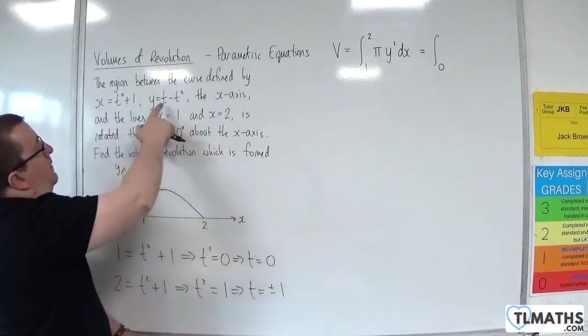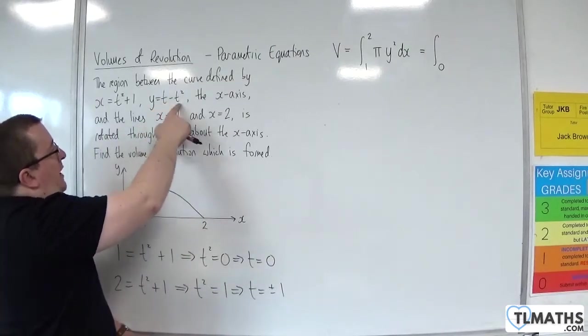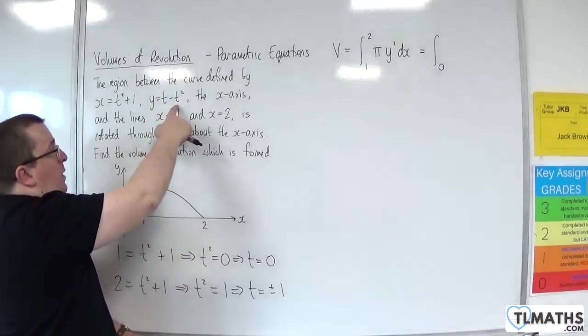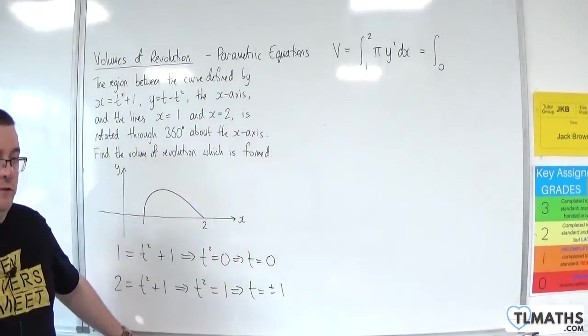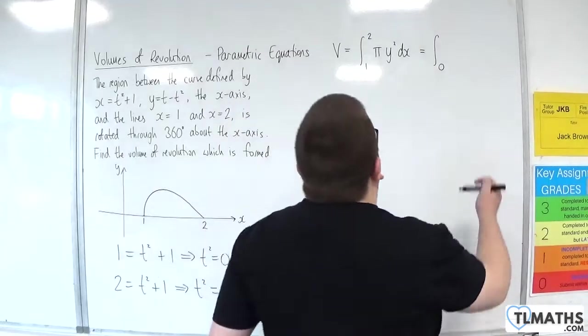When t is minus 1, we get minus 1 take away minus 1 squared, which is minus 1 take away 1, which is minus 2. So that's no good. So that means t is 1.